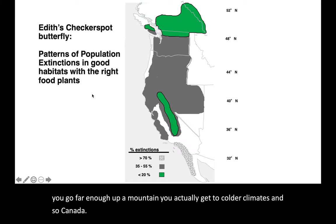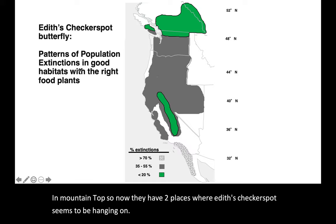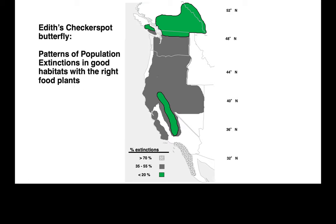The weird thing is that these were extinctions in areas that were considered good habitats with the right kinds of food plants for this butterfly to eat. It's not like they got dependent on the plantain again — this butterfly had a variety of plants, all of which they could eat, and the plants were still there. It's just the checkerspots that died out. So what the heck happened?